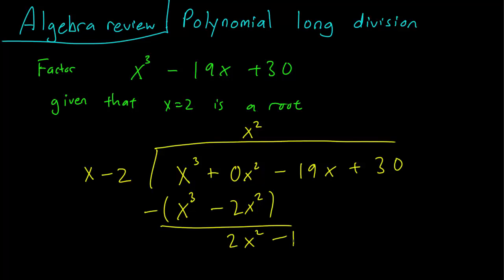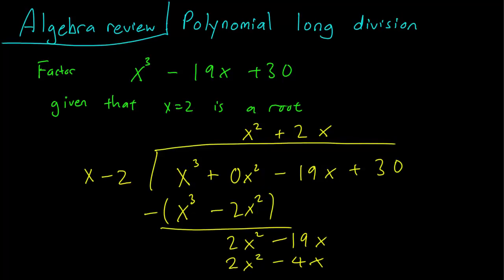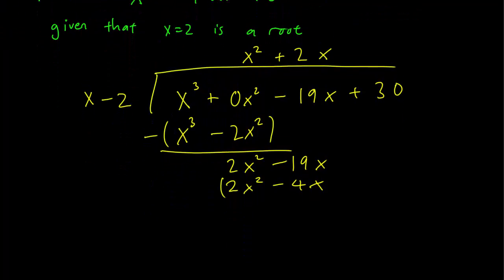We have to bring down the next term, which is 19x. And we ask ourselves: what do we need to multiply x with to get 2x squared? The answer is of course 2x. So we get 2x squared minus 4x. We subtract it out, this gets 0, and this will give us minus 15x.